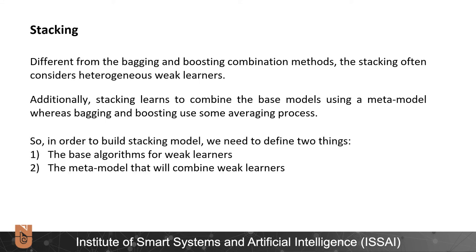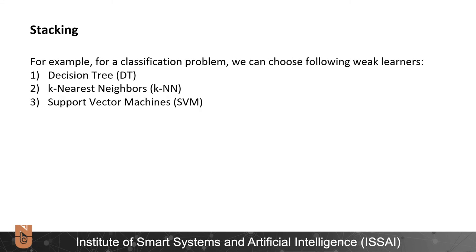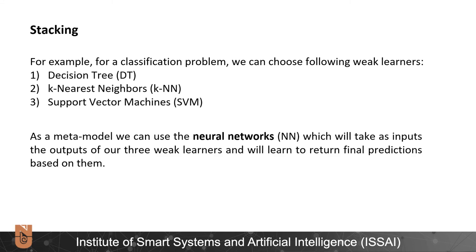So, in order to build a stacking model, we need to define two things: the base algorithms for weak learners and the meta model that will combine these weak learners. For example, for a classification problem, we can choose the following weak learners: decision tree, k-nearest neighbors, and support vector machines. As a meta model, we can use neural networks, which will take as inputs the outputs of our three weak learners and will learn to return final predictions based on them.